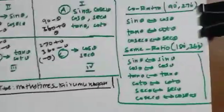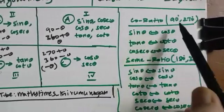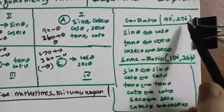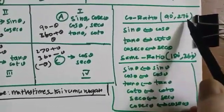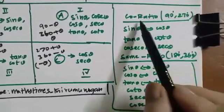The core ratio is from 90 degrees to 270 degrees. It's a core ratio.